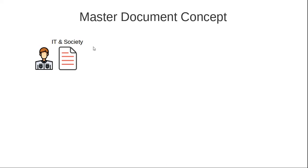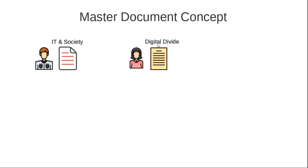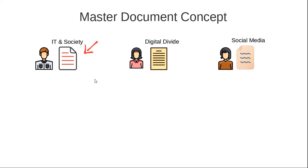I'm doing the introductory chapter titled 'IT and Society', one colleague is working on the chapter on digital divide, and yet another colleague is working on the impact of social media on society. Each of us are working at different locations using three different files, and as you can see we are using very different styling in each of our documents. The only thing we've agreed upon is that whenever we use a heading or subheading, we will style it as Heading 1 or Heading 2.